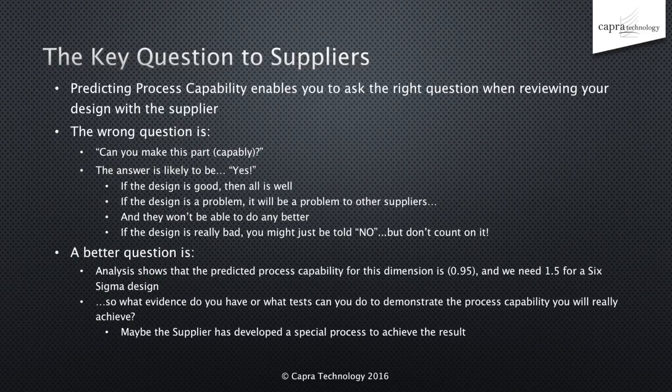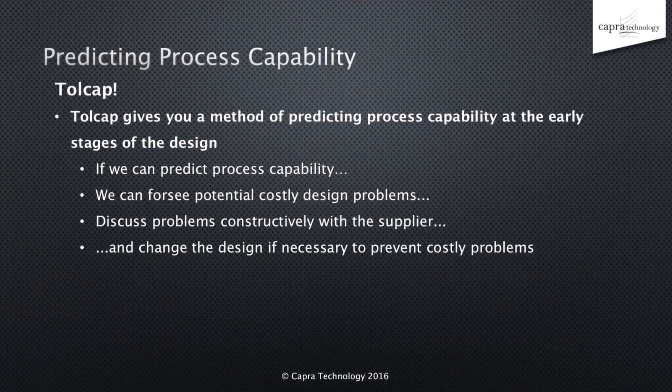Sometimes suppliers will be able to achieve the marginal, perhaps by special consideration of the tooling, perhaps by allowing for control charts. Sometimes suppliers can achieve the apparently impossible, but usually only because they have put a lot of effort, sweat and tears into the problem in the past. But all engineers understand the need for proof with data. If we can predict process capability, we can foresee potential costly design problems, discuss them constructively with our supplier, and make changes if we have to, in order to release a design to the supplier which he can meet capably and fulfil the design contract.